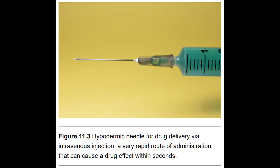Intravenous, or IV injection, is the fastest route of administration, with drug effects being detected within seconds. When a needle delivers the drug directly into the bloodstream, the drug is not subjected to any first-pass metabolism, meaning that the dosage delivered is similar to the dosage experienced. Many substances, in particular heroin, are delivered via IV injection since it produces the most rapid-onset high. In general, drugs taken via rapid routes of administration have a higher misuse potential.